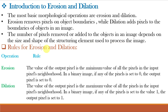What are the rules for erosion and dilation? For erosion, the value of the output pixel is the minimum value of all the pixels in the input pixel's neighborhood. In a binary image, if any pixel is set to 0, the output pixel is set to 0 — that means if the structuring element is not fitting completely, it will be set to 0. The opposite is the rule for dilation: the value of the output pixel is the maximum value of all pixels in the input pixel's neighborhood. For a binary image, if any pixel is set to 1, the output pixel is set to 1.